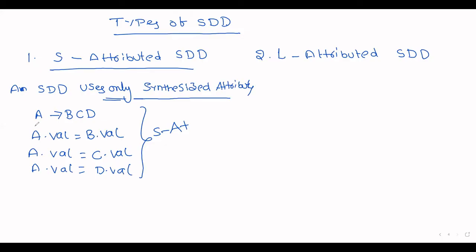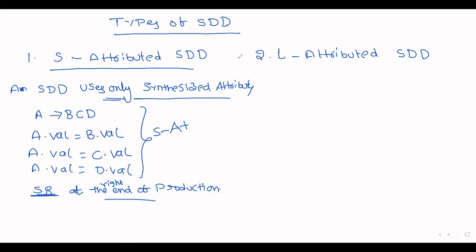In S-attributed SDD, the semantic rules are placed at the right end of the production only. That is, after the completion of the production, at the right end only we write the semantic rules.